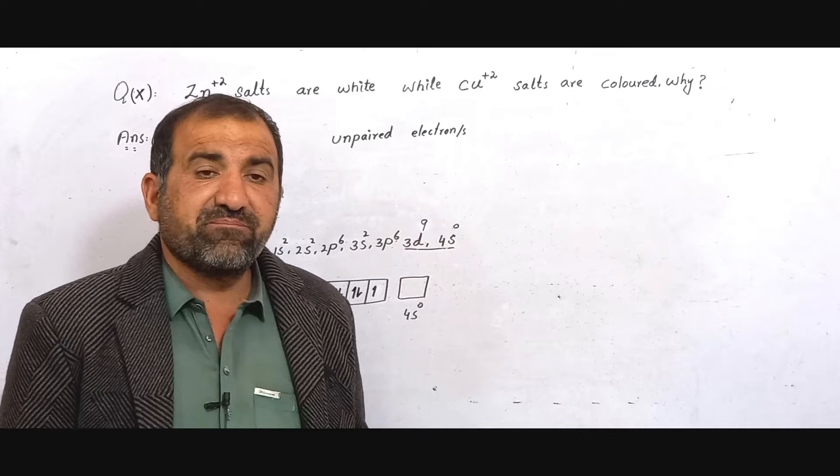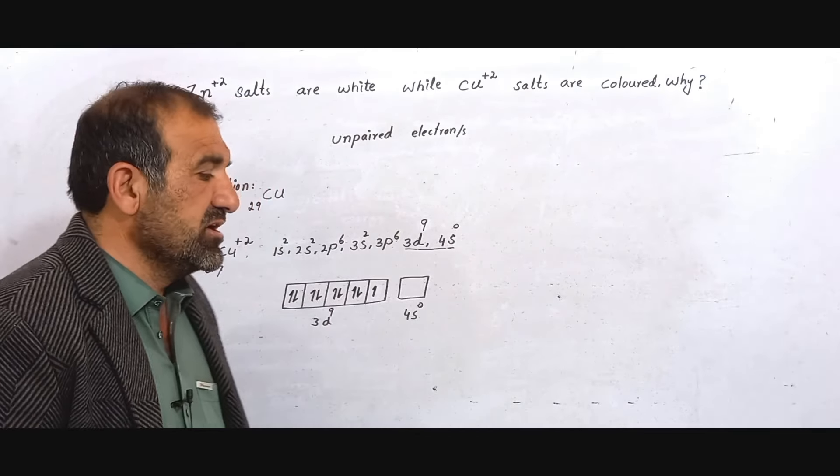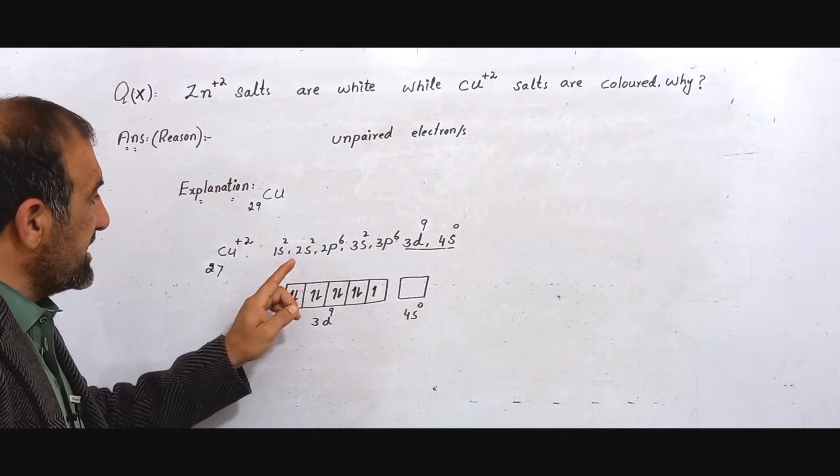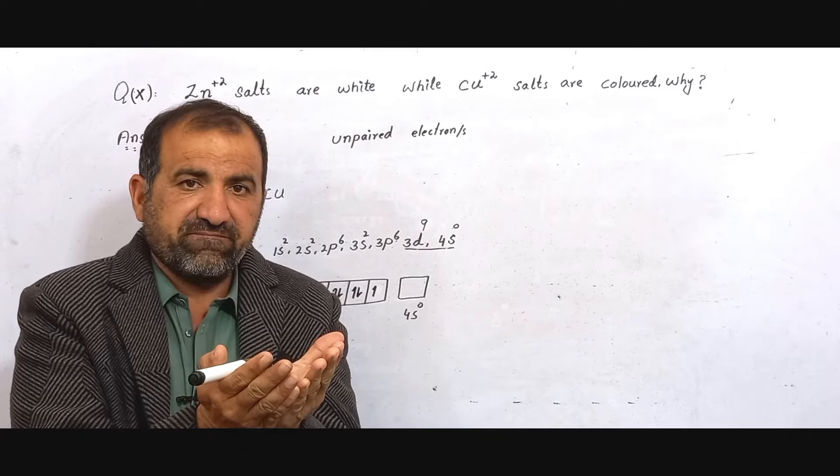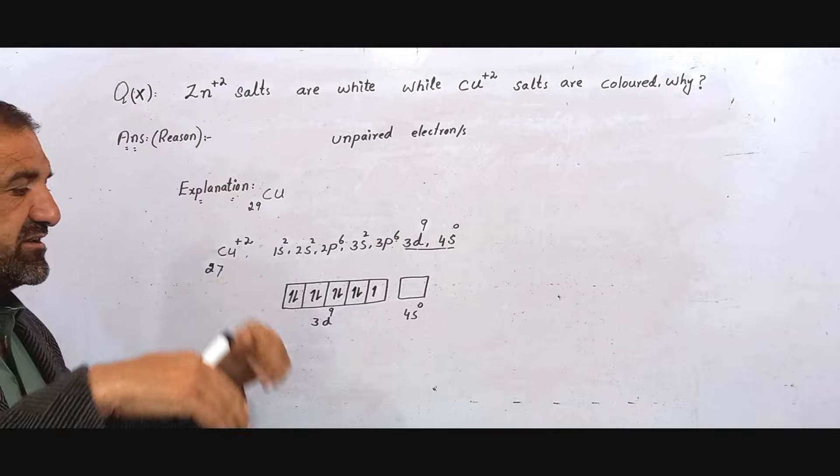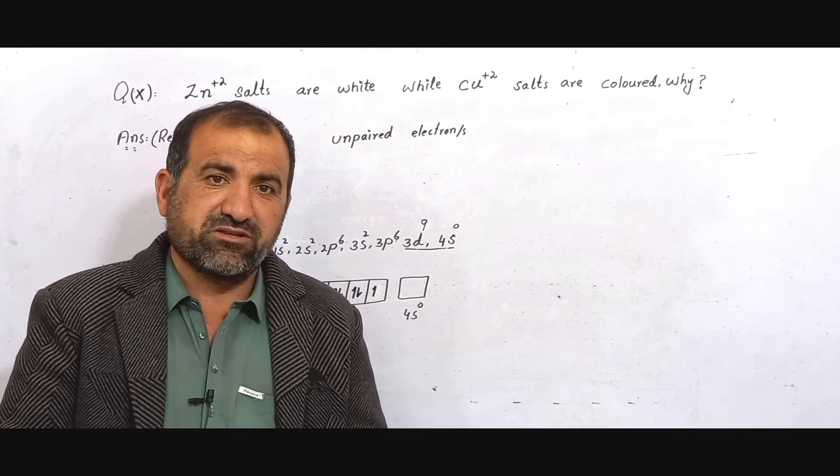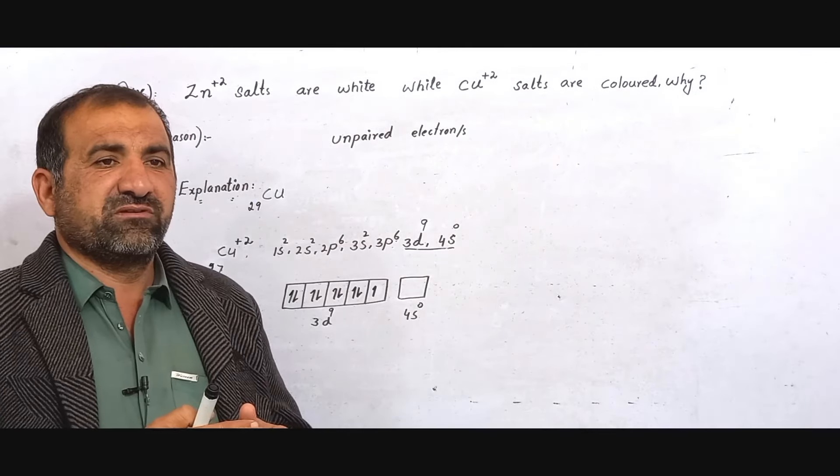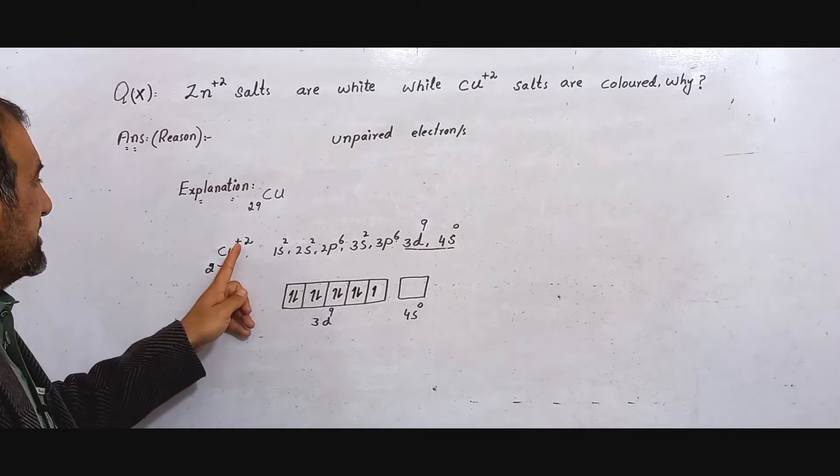This unpaired electron causes the compound to be colored. When visible light falls on it, it will absorb yellow color from the visible light. Then it will transmit and emit the complementary color which is blue color. That's why it appears blue.